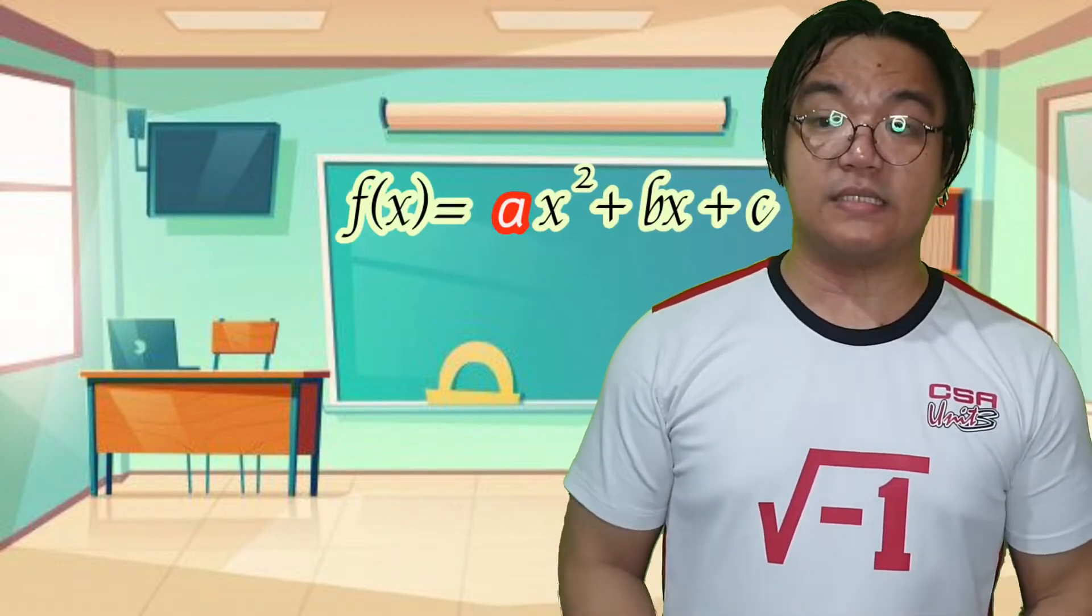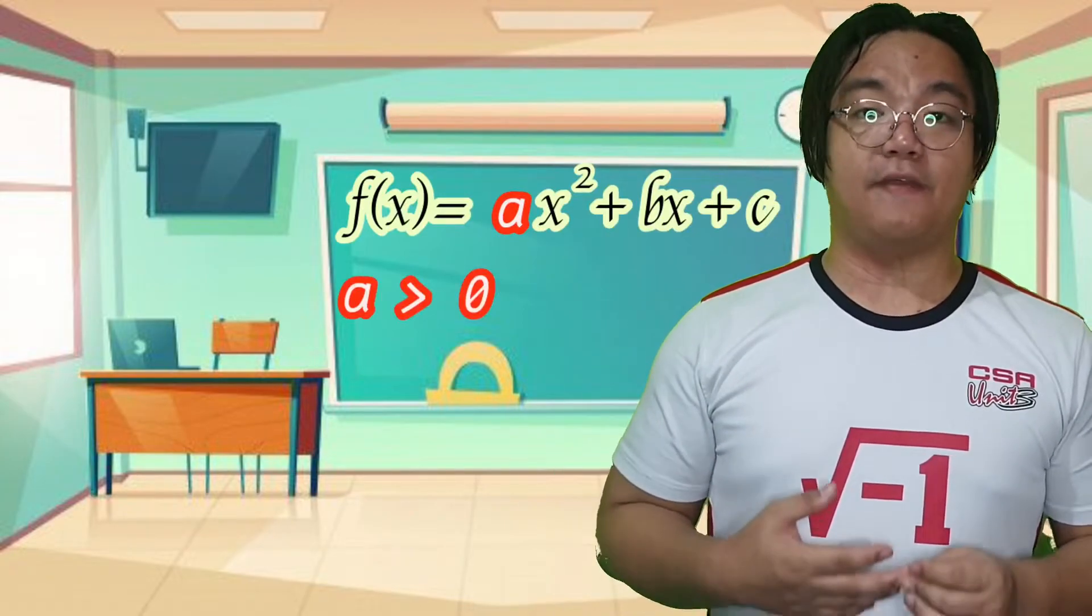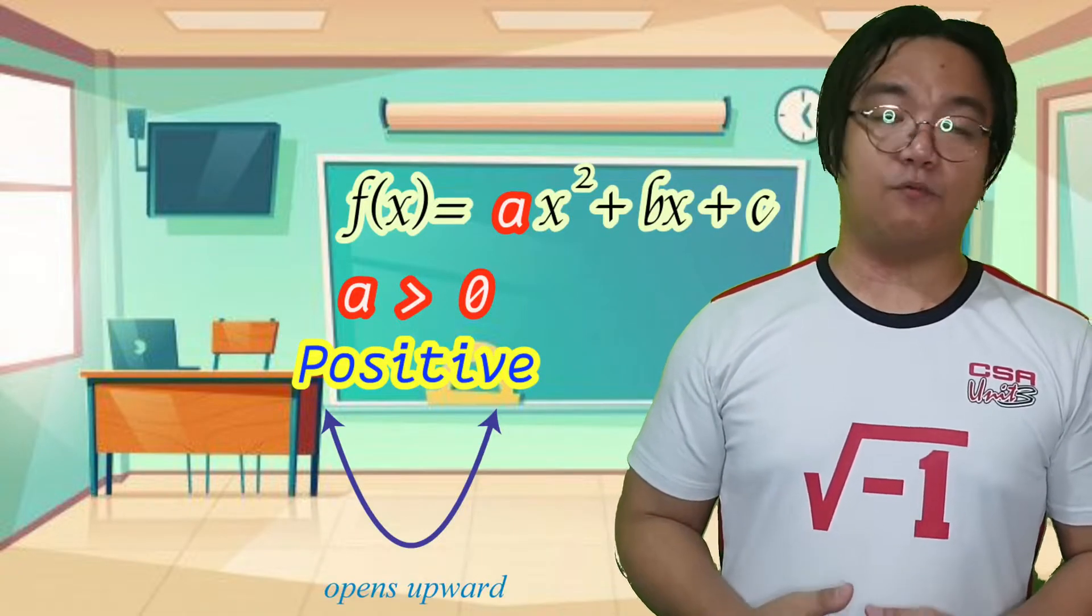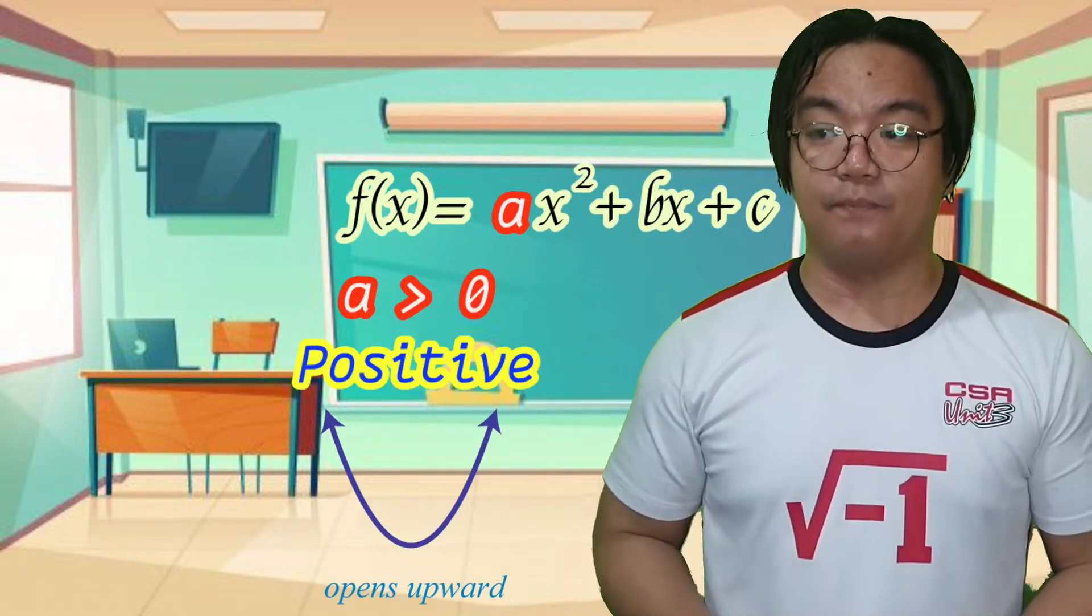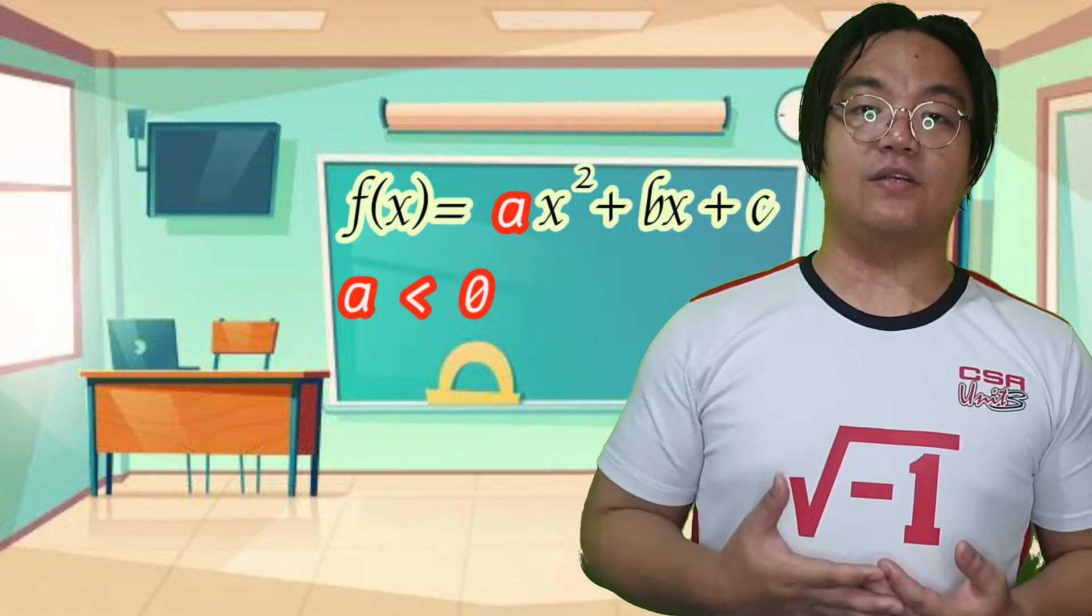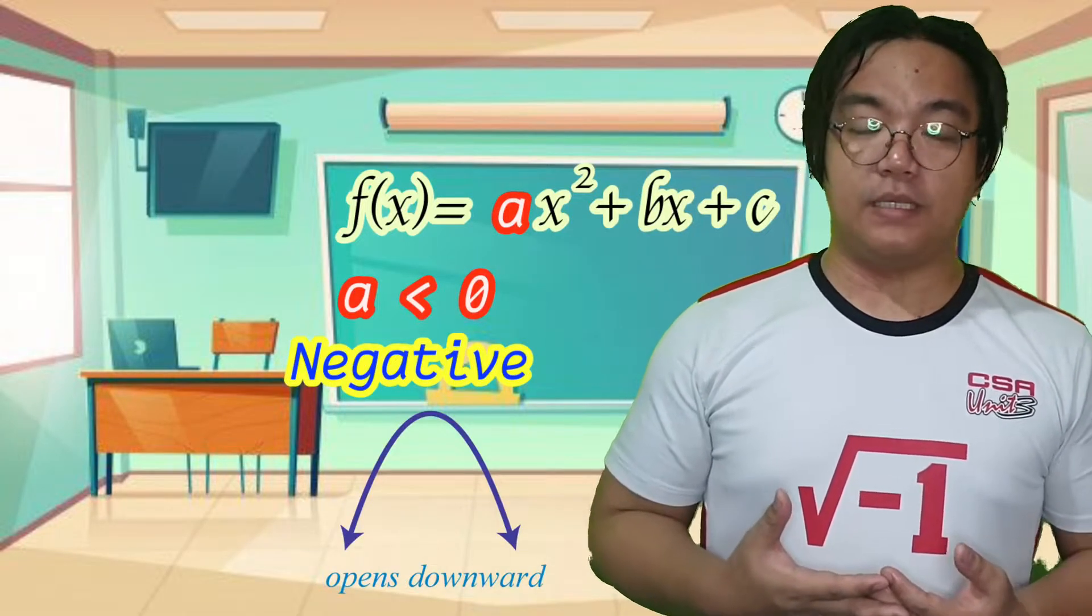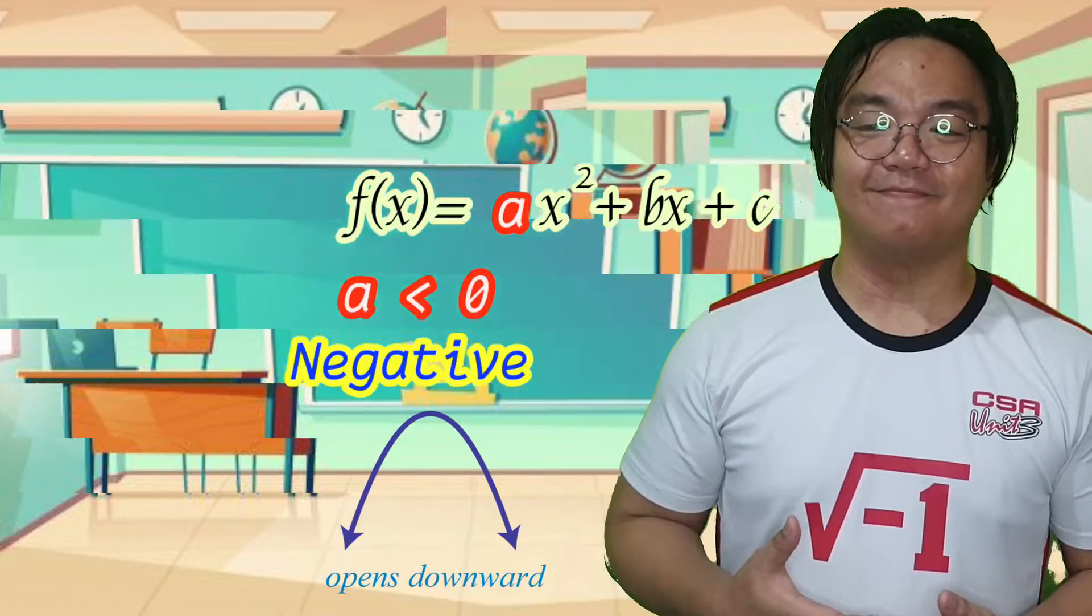We know that if a is greater than zero, then the graph would be an upward opening parabola. And if a is less than zero, then the graph would be a downward opening parabola. But how do we know the end behavior of cubic polynomials or even higher degree polynomials?